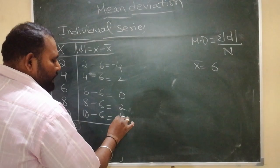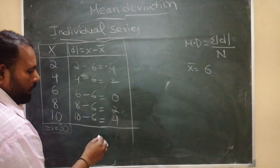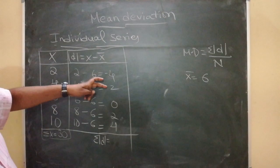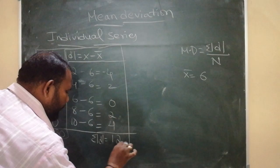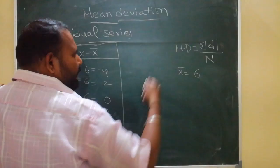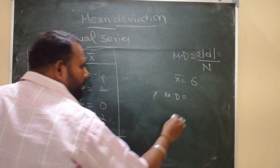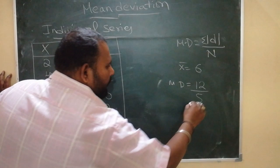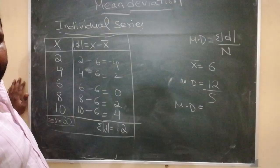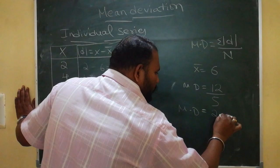So, the sum of modulus d: 4 plus 2 is 6, and 4 plus 2 is 6, so sigma modulus d equals 12. Now we will apply the mean deviation formula: mean deviation equals sigma modulus d divided by n, that is 12 divided by 5, so mean deviation equals 2.4.